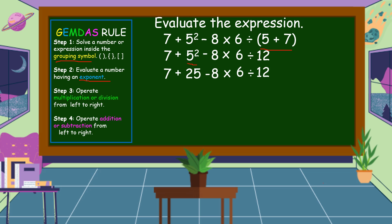What is our third step? The third step is we're going to operate multiplication or division. Let's look at the remaining expression: 7 plus 25 minus 8 times 6 divided by 12. Here, multiplication comes first before division. So let's multiply. Bring down first 7 plus 25, then minus — 8 times 6 is equal to 48 — divided by 12.